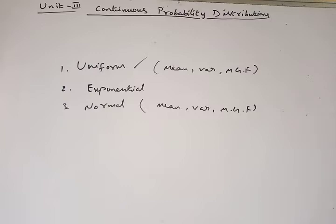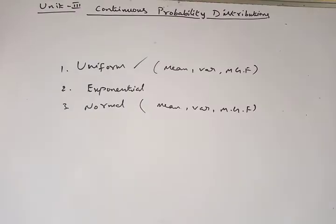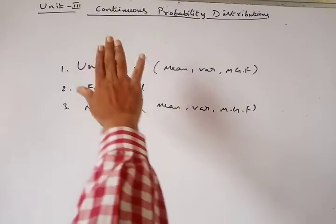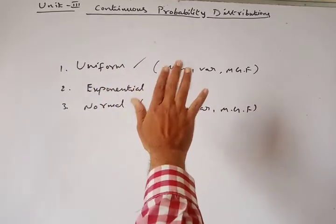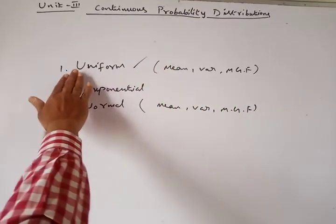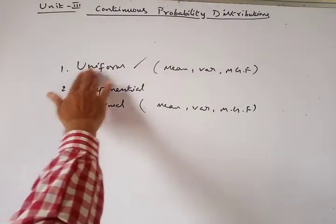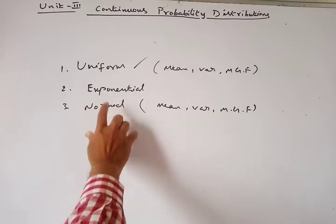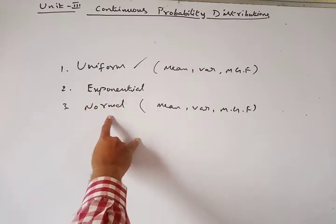If possible, we will also go through a few statistical parameters of these distributions — some problems. So Unit 3, Continuous Probability Distribution, has mainly three topics: uniform distribution, exponential distribution, and normal distribution.